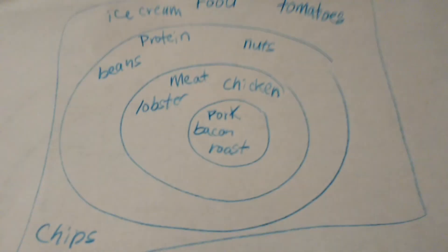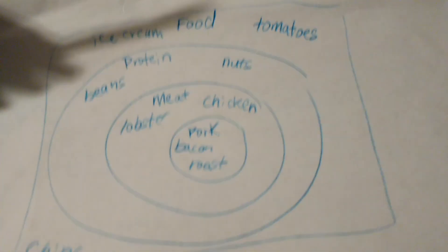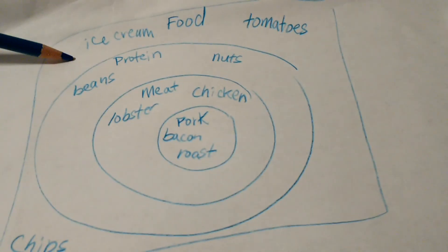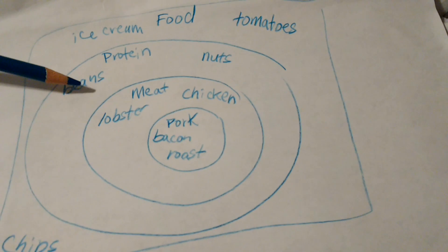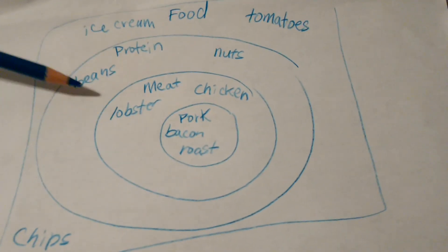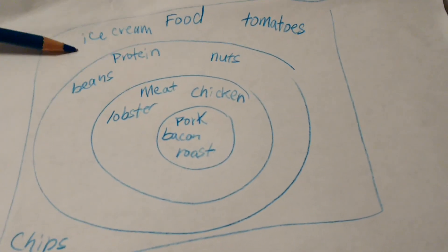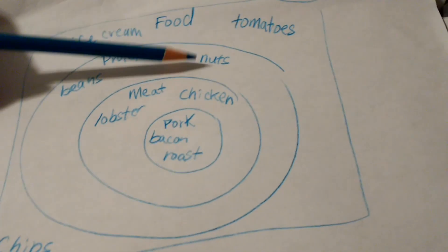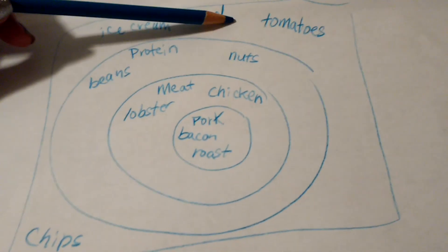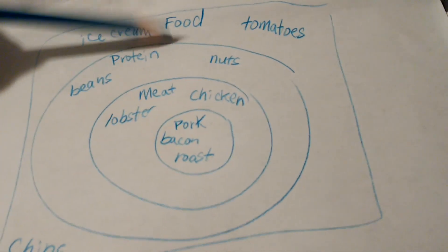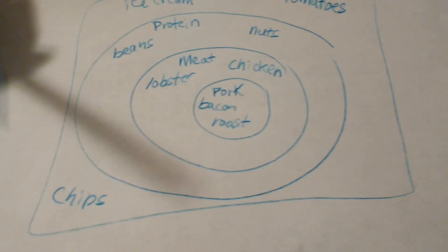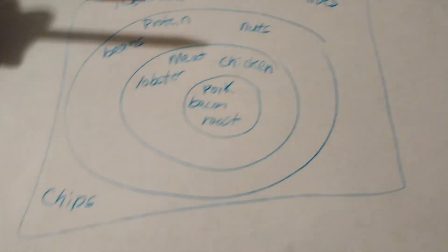Okay, so the way that this works is things that are outside stay with the things that are the outside. So for example, beans are a protein and they are a food. Nuts are a protein and they are a food. Ice cream doesn't work in any of these, but it is a food. Tomatoes are a food. Chips are a food.